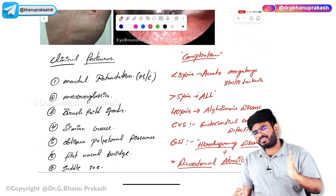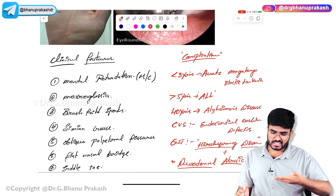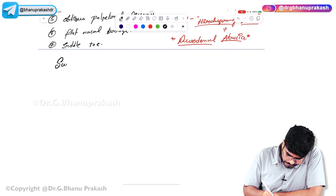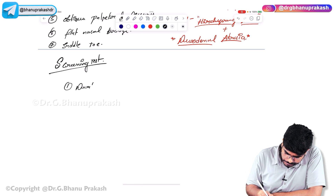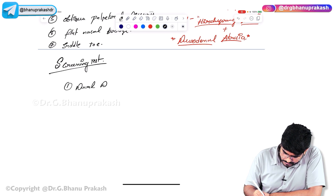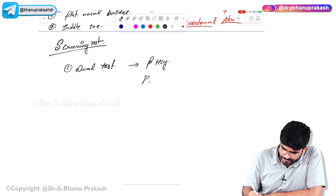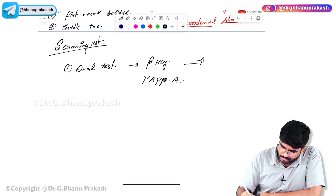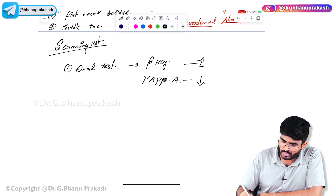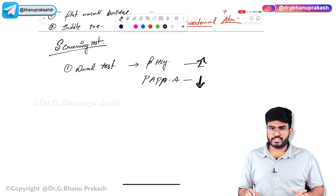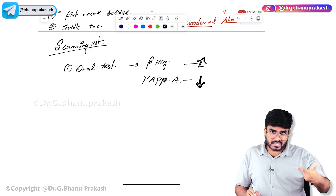Screening tests for Down syndrome in utero: outside the womb you can diagnose just by looking at the face, but in utero we use screening tests. The first is the dual test, which checks two levels — beta-HCG and PAPP-A (pregnancy-associated plasma protein A). In Down syndrome, PAPP-A levels are decreased and beta-HCG levels are elevated.